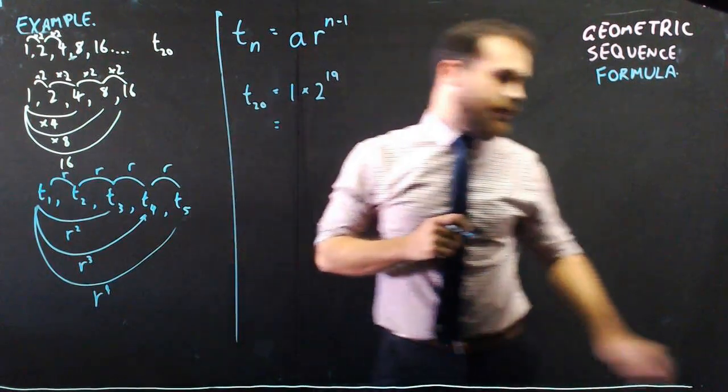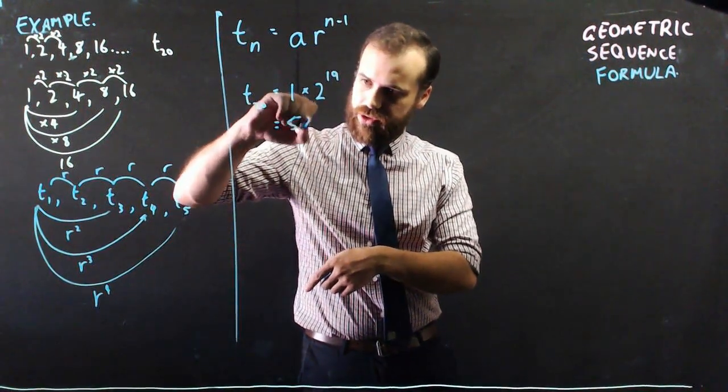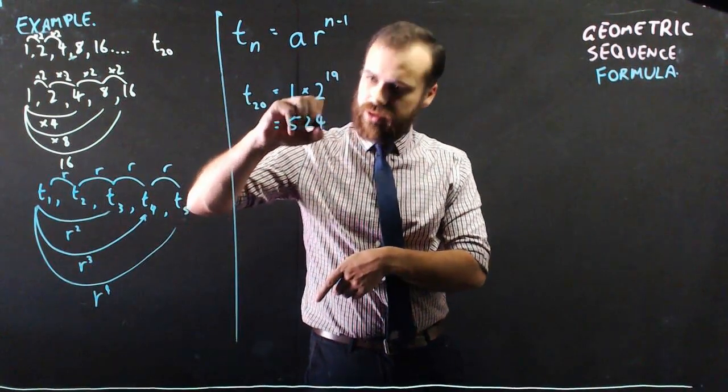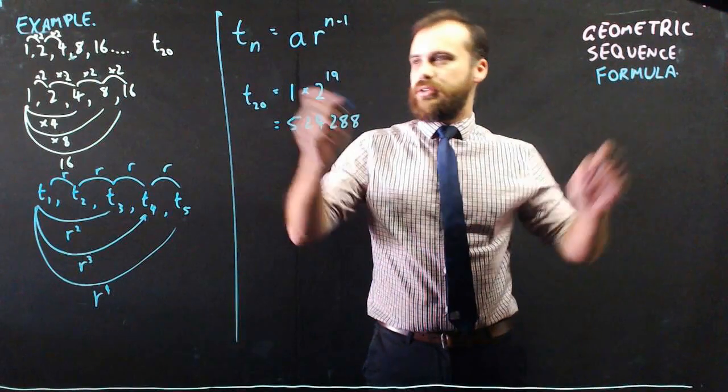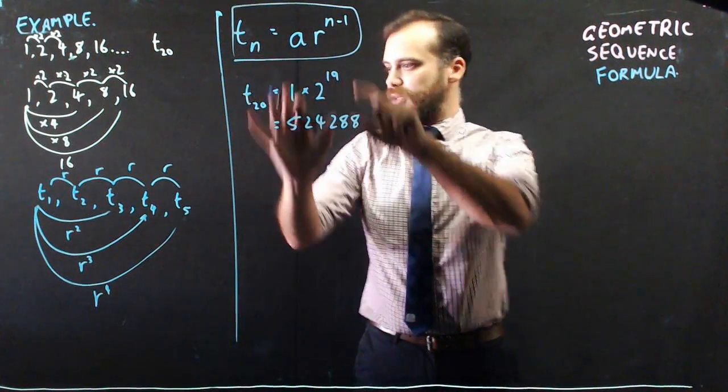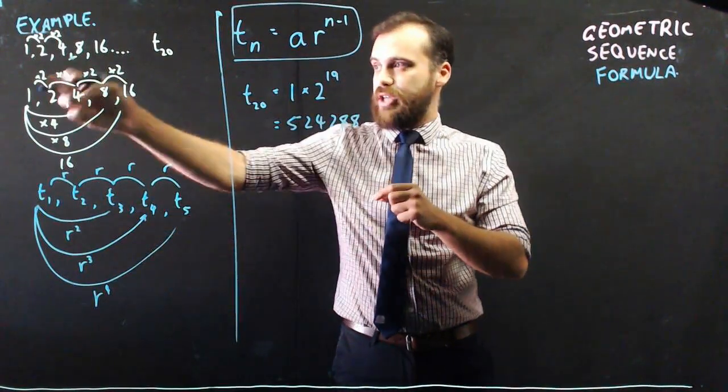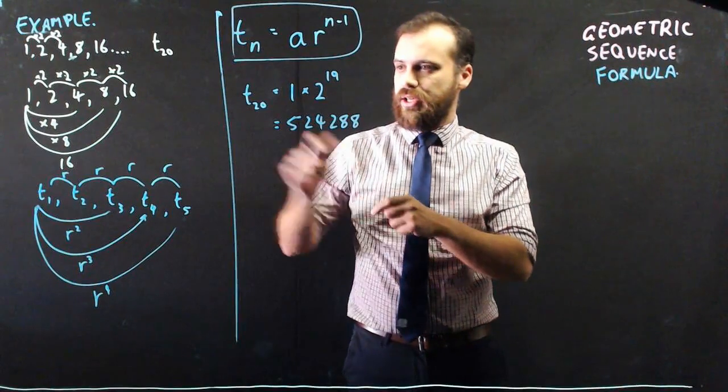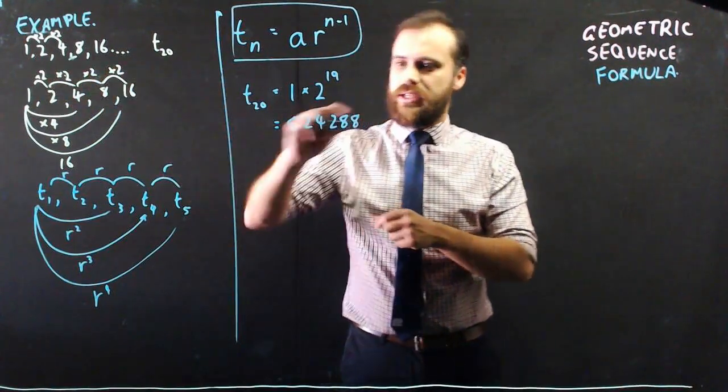I have a feeling this is going to be a really big number. So, term 20 is going to be 524,288. Okay, so this is your geometric sequence formula. This is why it works. We're raising our ratio to a power to get there eventually, and here's a quick bit of working. Here's how to find term 20 in this sequence here.